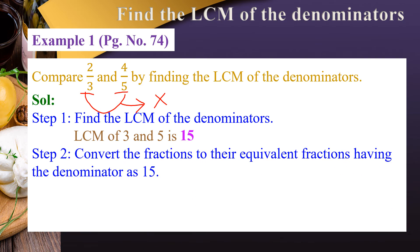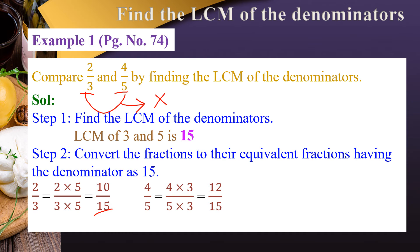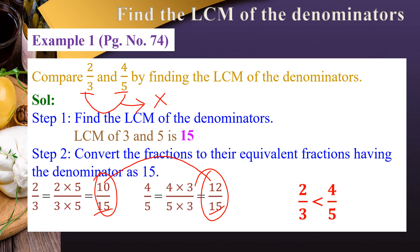We convert both fractions to equivalent fractions with denominator 15. For 2/3: 2×5 ÷ 3×5 = 10/15. For 4/5: 4×3 ÷ 5×3 = 12/15. We now have 10/15 and 12/15. Since the denominators are the same, we compare the numerators: 12 is bigger. Therefore, 2/3 is less than 4/5.